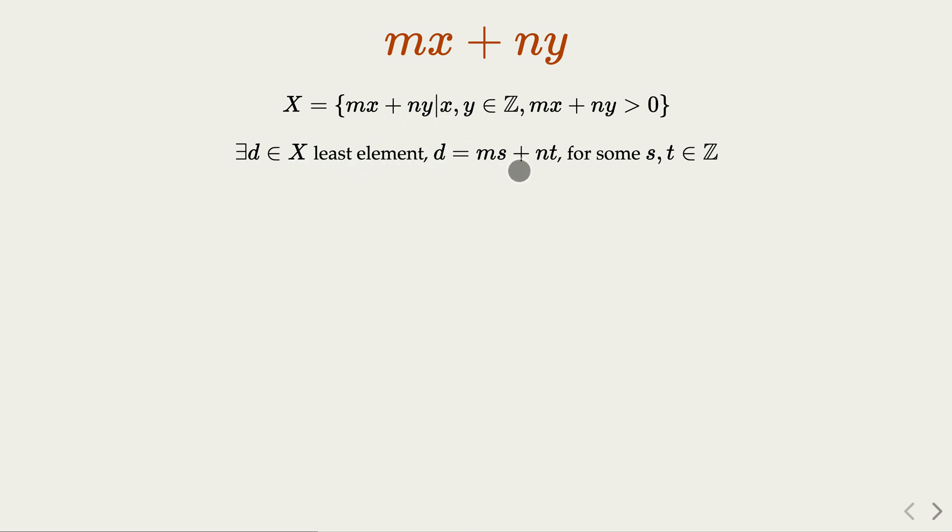d, of course, is also a positive linear combination of m and n, for some s and t, where s and t are integers, could be negative.